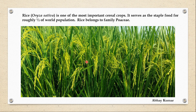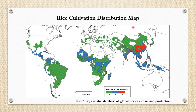Rice, or Oryza sativa, is one of the most important cereal crops. It serves as a staple food for roughly half of the world's population. It belongs to family Poaceae, which also includes plants like wheat, maize, and grass. In the rice cultivation distribution map, you can see that rice is cultivated in almost all parts of the world, and India is one of the major producers. Particularly the eastern and southern parts of India are very important for rice cultivation, where people also depend on rice as their staple food.